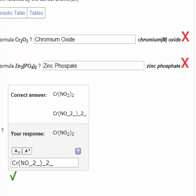So it's chromium(III) oxide. Again, the 3 is the charge on each chromium. And the next one, zinc phosphate, it appears you just spelled phosphate incorrectly.